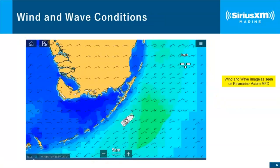Wind and wave conditions is probably our second most popular feature. This screen gives us several pieces of information at once. The first is wind speed and direction. With Raymarine, you have two choices of symbols: you can have it show up as an arrow or as a wind barb. I prefer the wind barb because it gives me speed and direction at the same time.